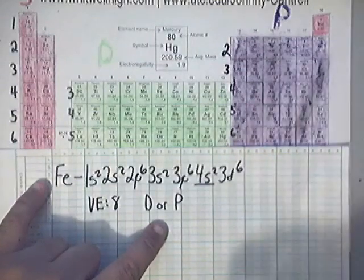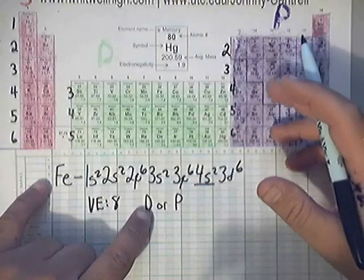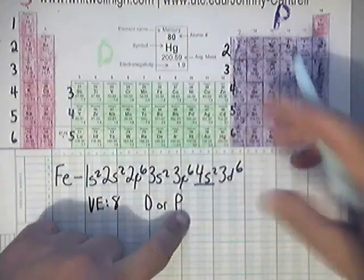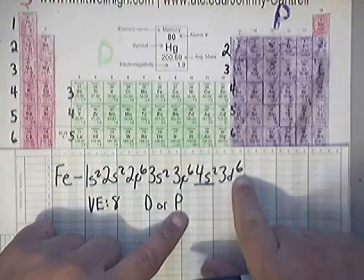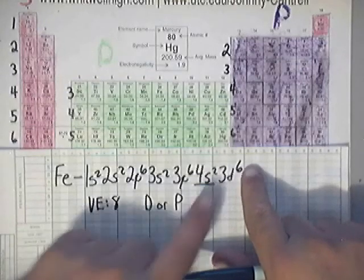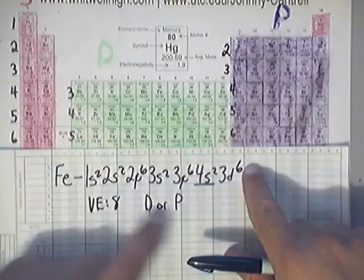Just think as d for diamagnetic is being done, and paramagnetic being partially filled. So when you look here, this d orbital does not have 10, so it's partially filled. So that makes the entire thing of iron being partially filled, it makes it paramagnetic.